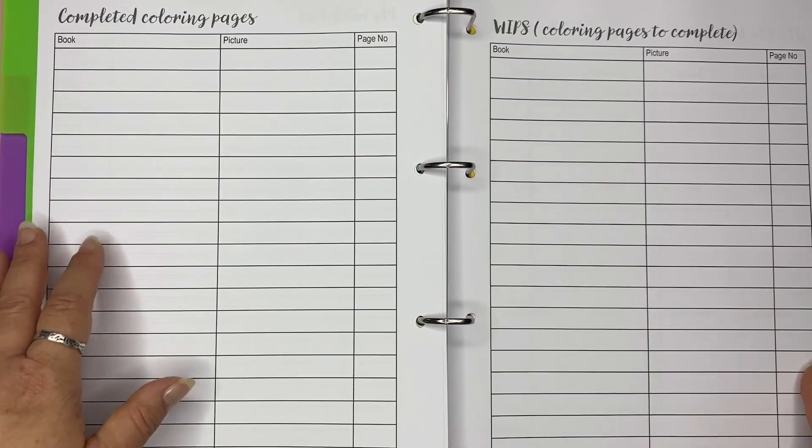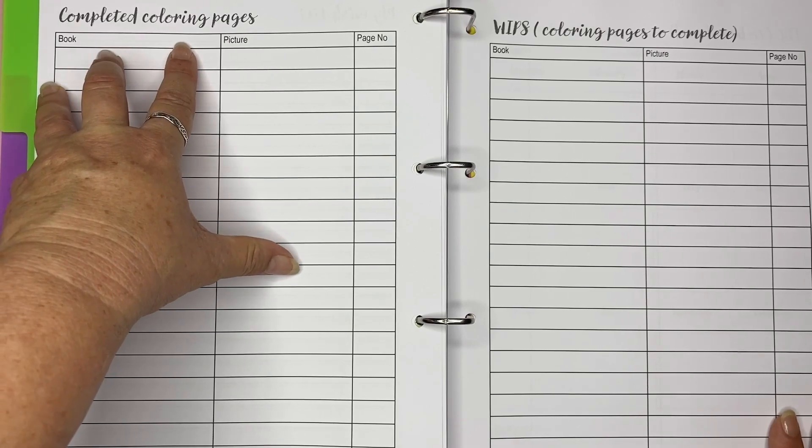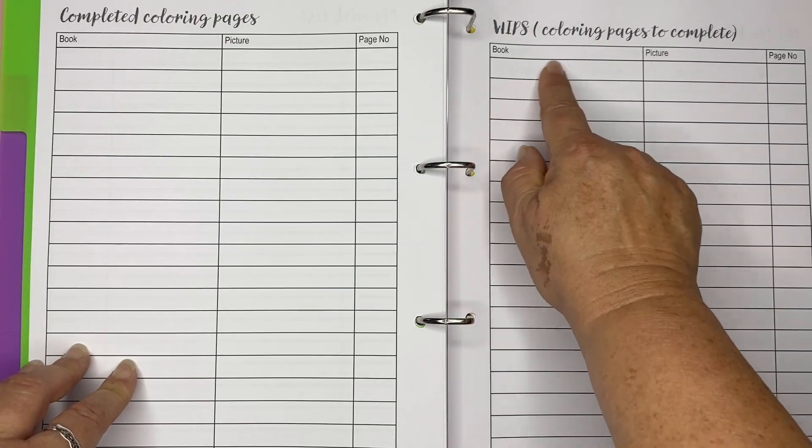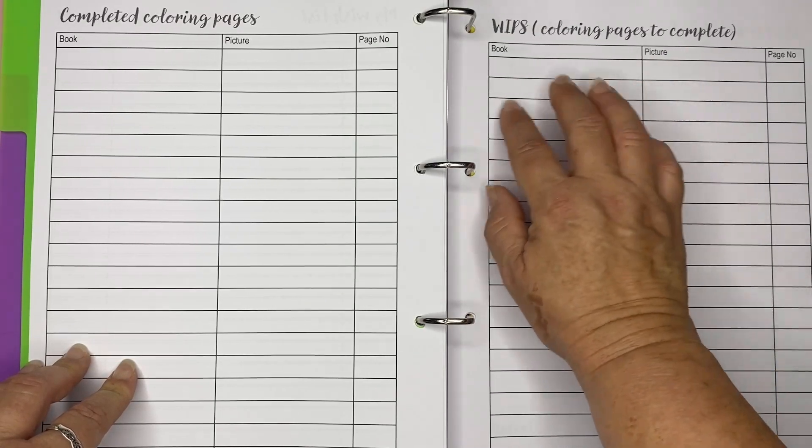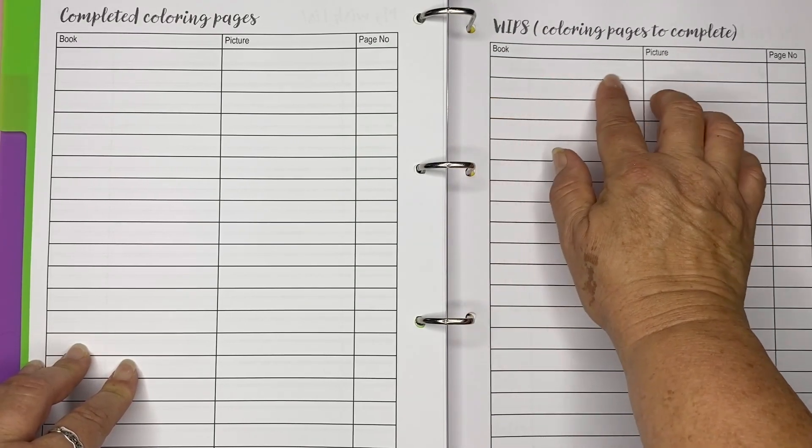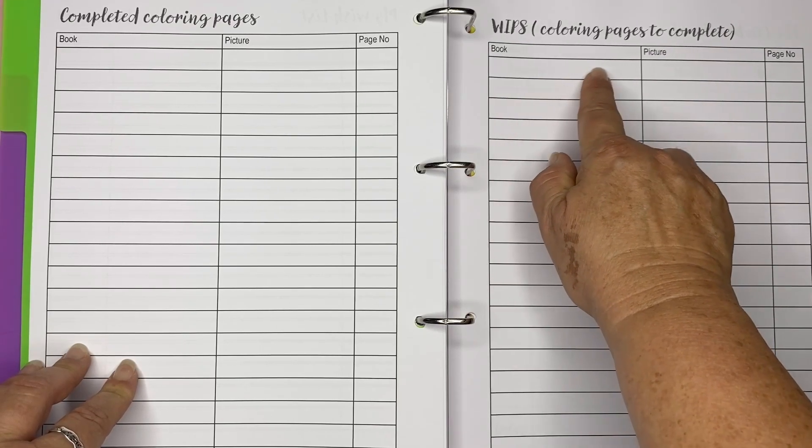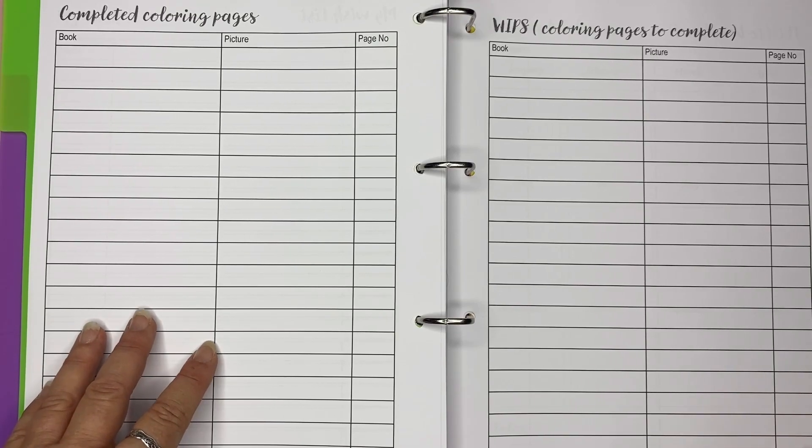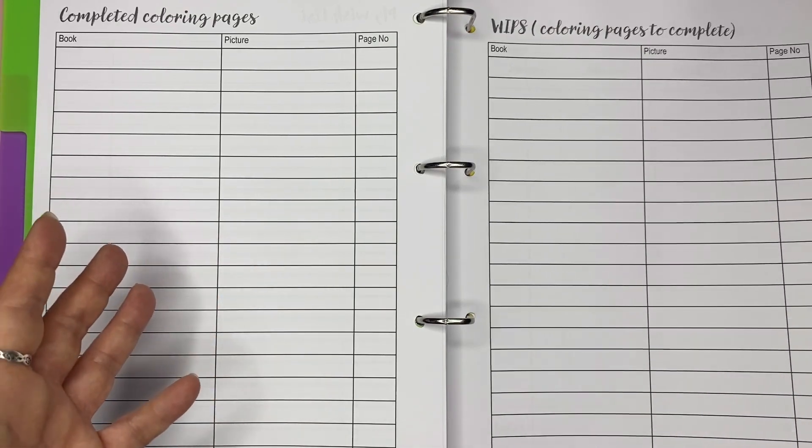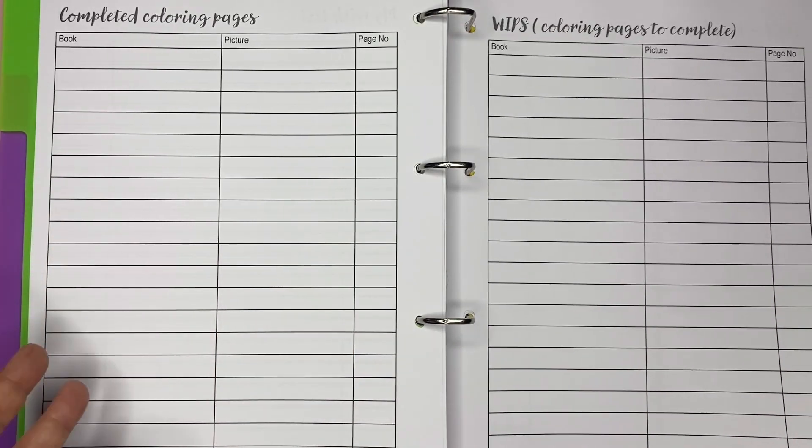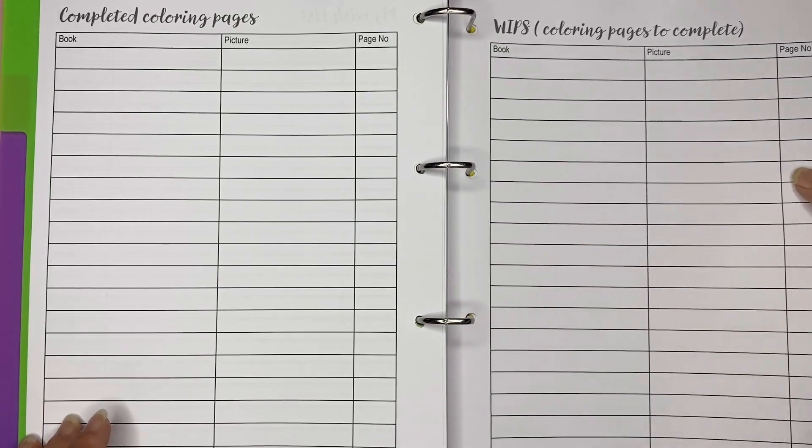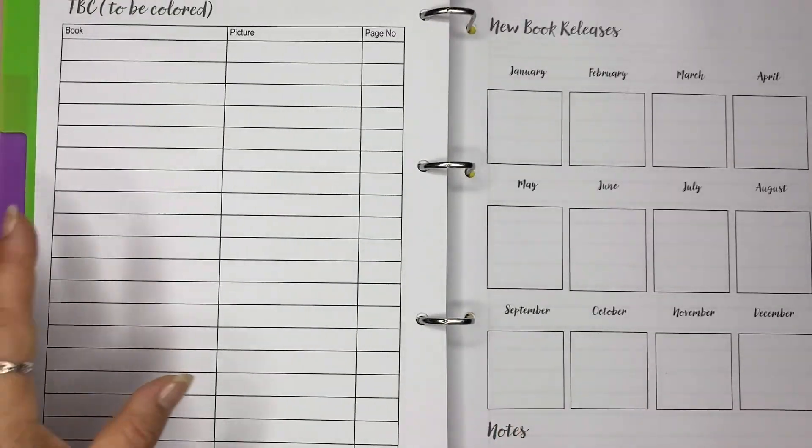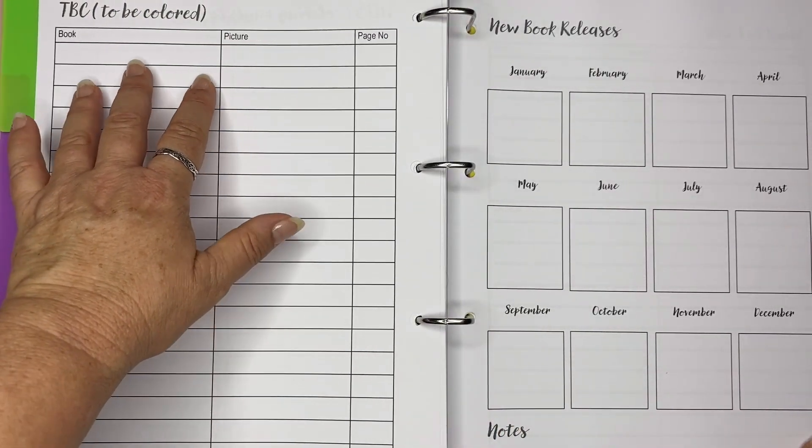Now, I've also got a spot to write out my completed colouring pages and a spot for those WIPs. So if I want to take part in something where you colour a WIP, I can write down my WIPs here. I can write down what book it is, what picture it is, and the page number. And I can keep track of it and go back. And when I've got time, I can dig that book out rather than go through my mountain of books. And this is really important for me.